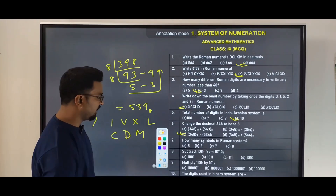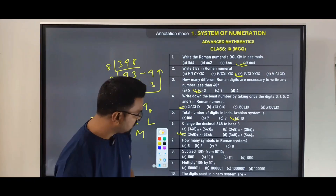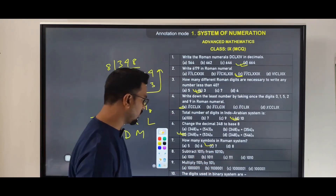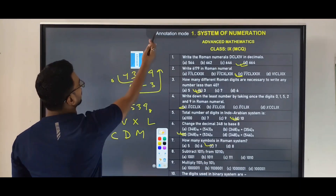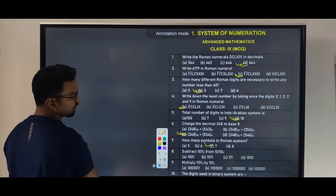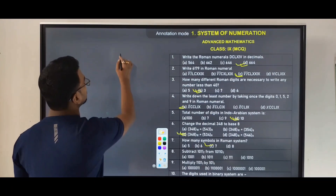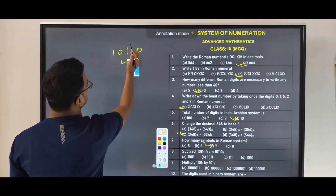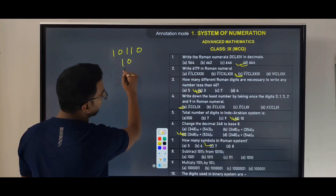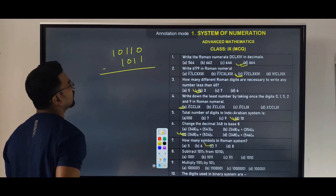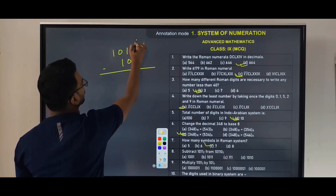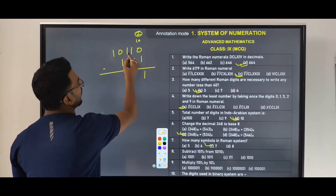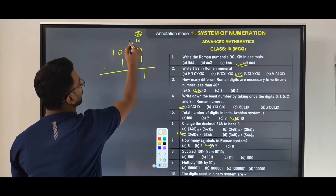Next question: subtract 10111 from 101110. Performing binary subtraction of 10111 from 101110, we carry out the subtraction step by step.